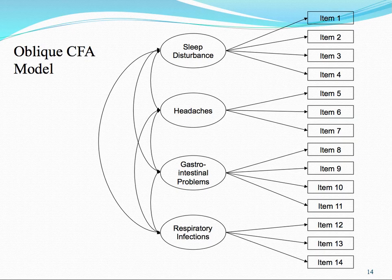This does not necessarily have to be the case for all models. Looking at this model, you can see a few things. First, we have four latent variables: sleep disturbance, headaches, gastrointestinal problems, and respiratory infections. We have bi-directional arrows specifying that there is a correlation between them.